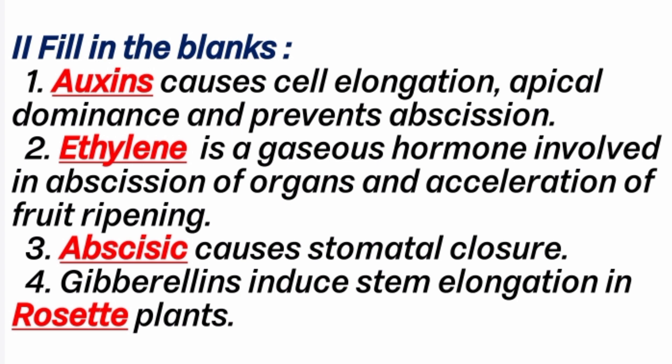2nd question: Ethylene is a gaseous hormone involved in abscission of organs and acceleration of fruit ripening. Answer is ethylene — the only one gaseous plant hormone. 3rd question: Abscisic acid causes stomatal closure.